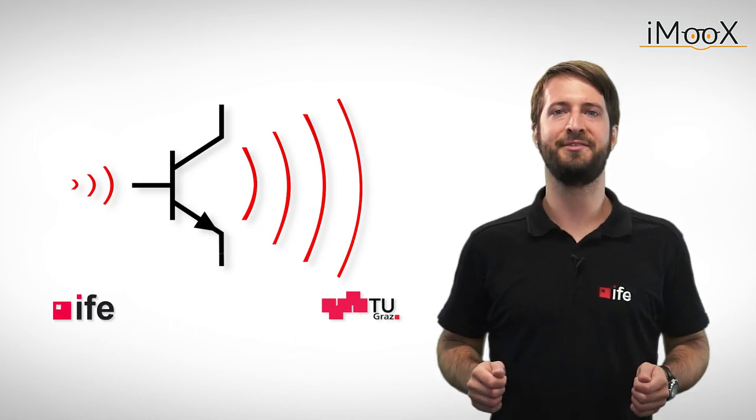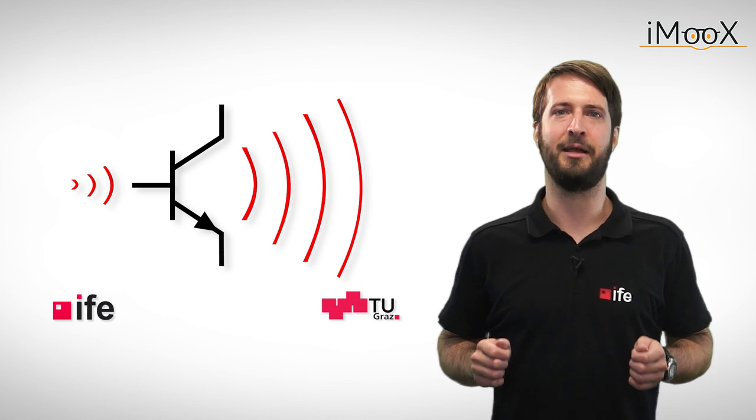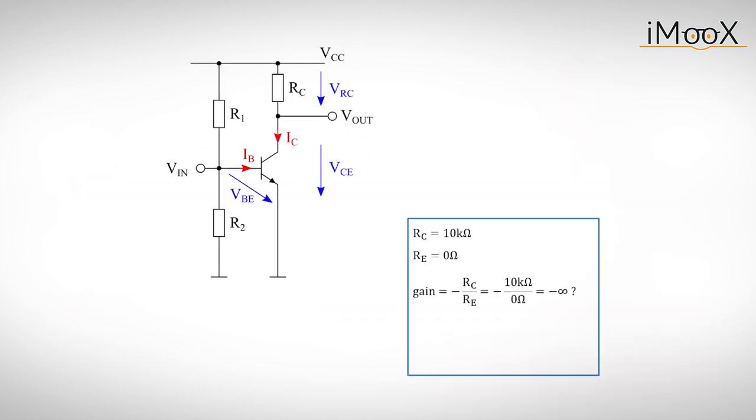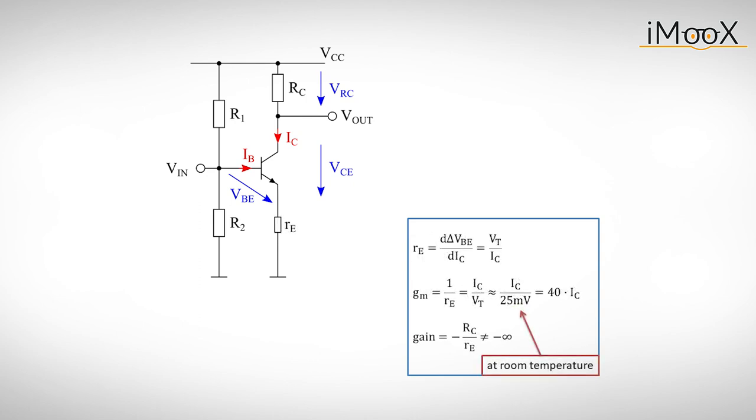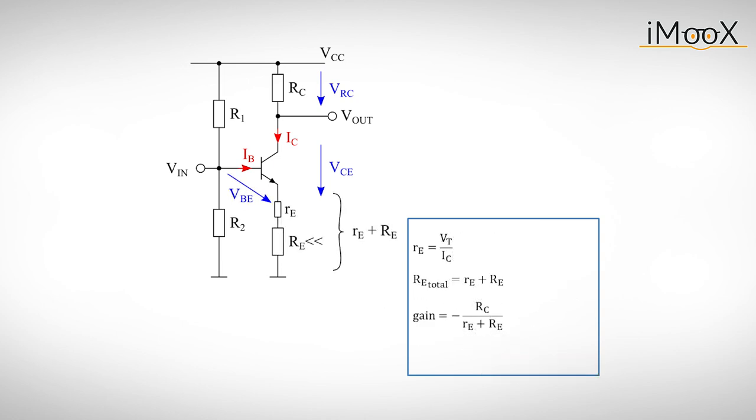Well equipped with our new formulas, we can finally revisit the common emitter amplifier. Previously, we got wrong answers for the voltage gain when we set the emitter resistor to zero. At this point, we did not know that the transistor has also an intrinsic resistance RE, which can be easily calculated by taking the derivative of VBE with respect to IC. It is also very common to state the inverse value of RE, which is then called the transconductance GM. This intrinsic resistance must be added to the external emitter resistor and is only significant if the external emitter resistor is very small.